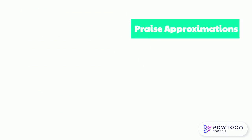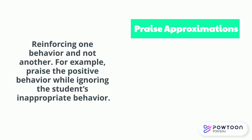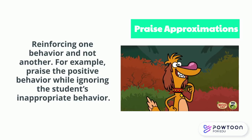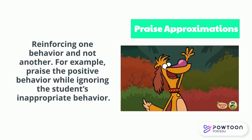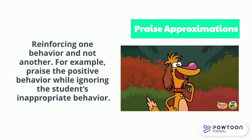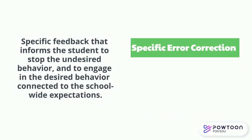When you praise approximations, you reinforce one behavior and not another. For example, you would praise the positive behavior while ignoring the inappropriate behavior. You might say, 'Johnny, I love that you raised your hand.' Using specific error correction means giving specific feedback on undesired behavior, how to engage in desired behavior, and connecting that to school-wide expectations.